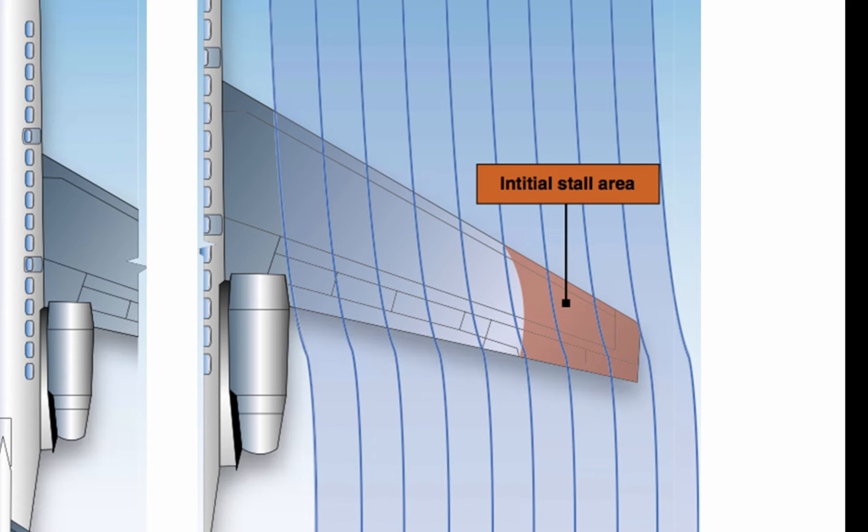One problem, however, with the swept-back design is that the wing tends to stall at the tip first rather than the wing root, which reduces the aileron's effectiveness during a stall.